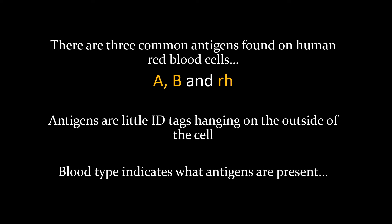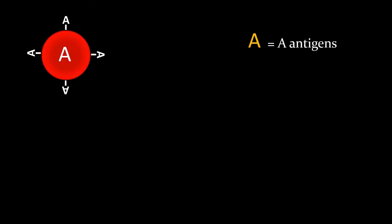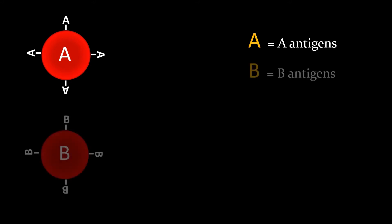The name of a blood type indicates which antigens are present. A person that has A blood has A antigens. B blood has B antigens.